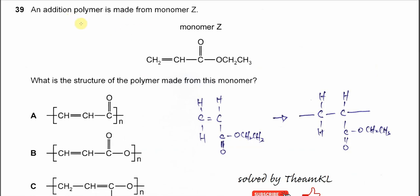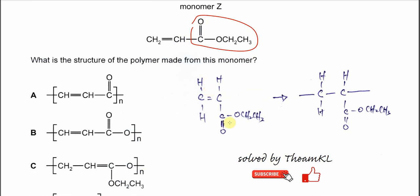Question 39. An addition polymer is made from monomer Z. We just need to focus on the C=C double bonds here, because when it forms a polymer from this monomer, the C=C double bonds will open up and form the polymer chain. This will be the side chain. It's better to draw the monomer structure arranged in this way, then you can get the polymer chain easily.